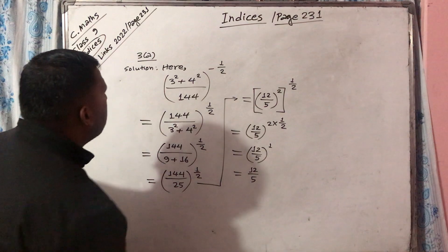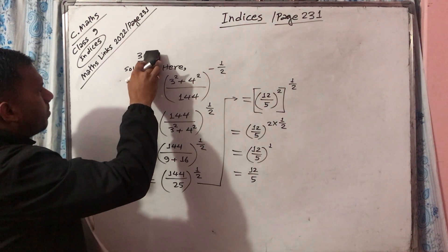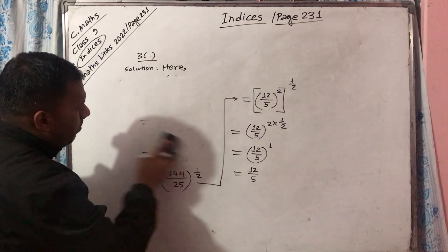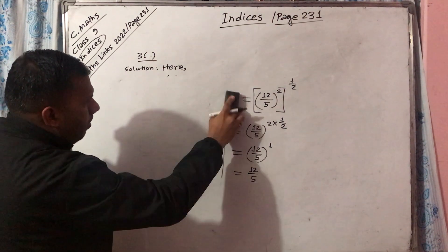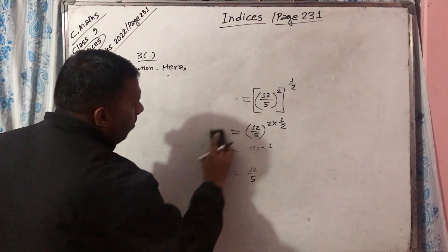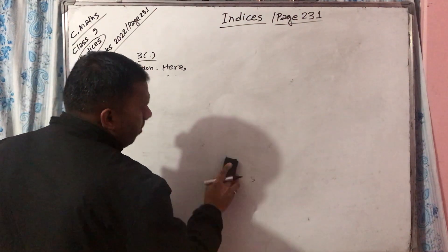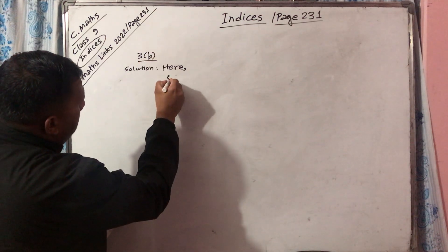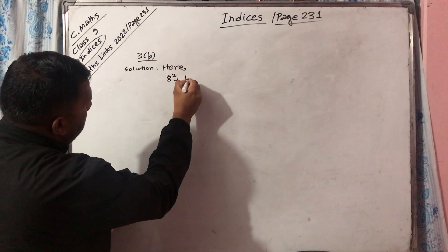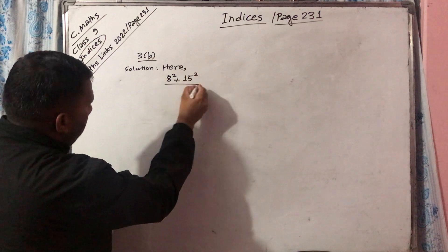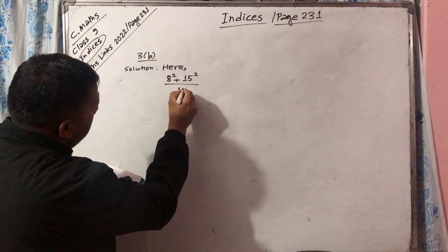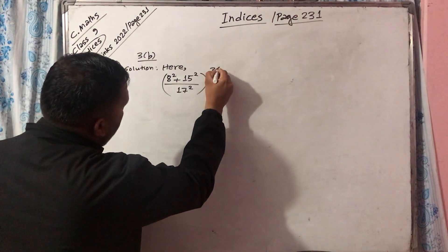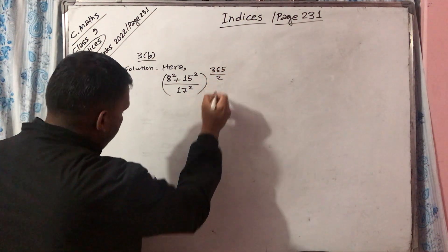Now we go to question number 3B. On 3B we have 8 square plus 15 square, both upon 17 square. Its whole power is 365 upon 2.